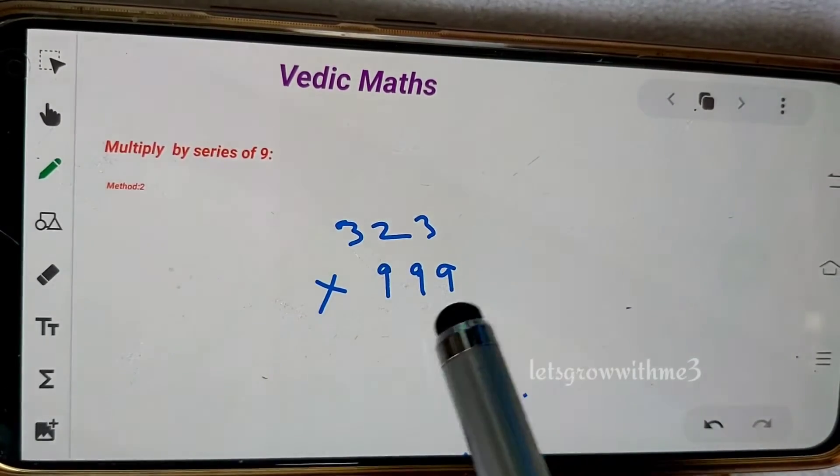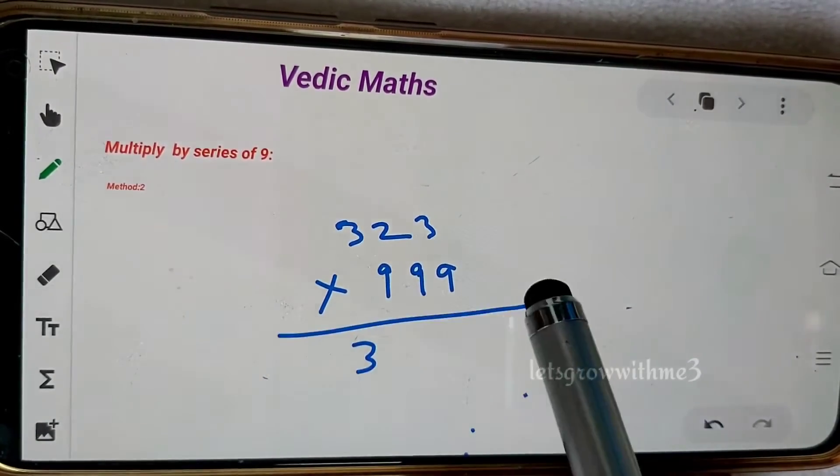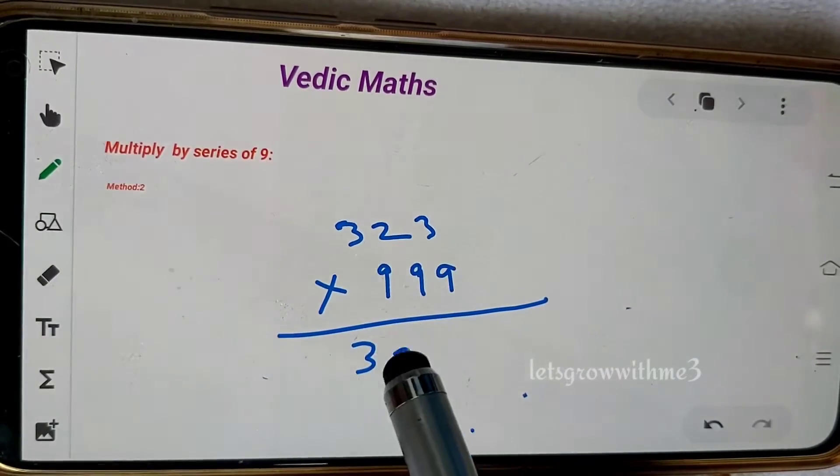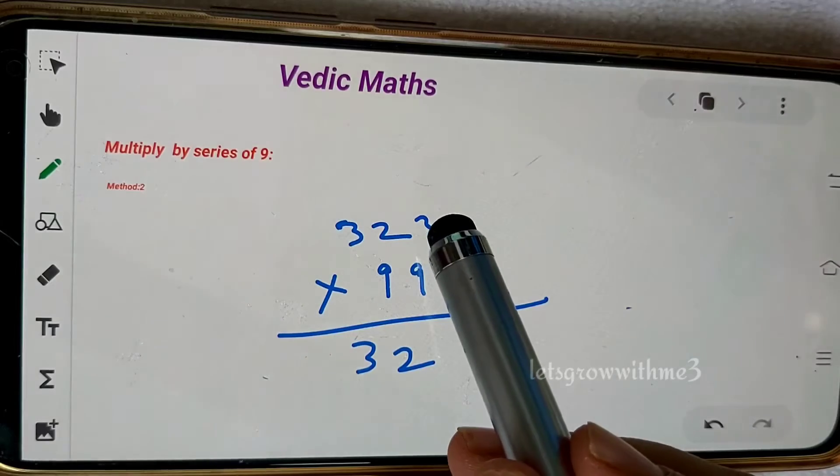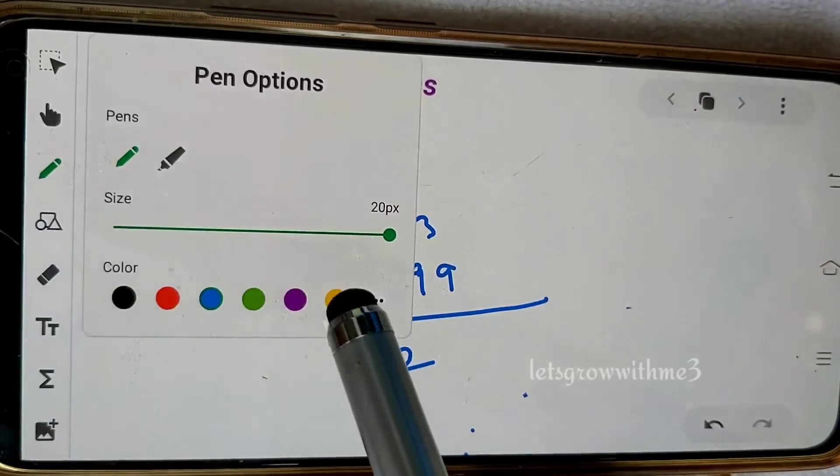When we multiply, whatever the number we have, we need to write down as it is except one space. One space we need to decrement by one.